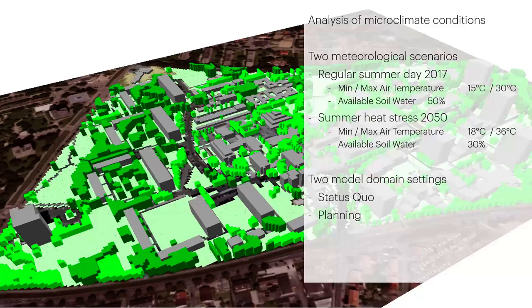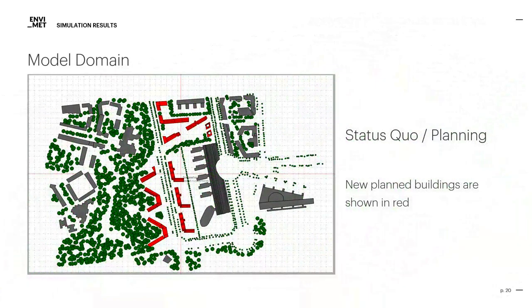Those implications are mainly hotter air temperatures during nighttime and daytime and a lower amount of soil water being available. In the beginning, two model areas were designed: the current status called status quo and the planning status. Both are simulated for each meteorological scenario, so that we end up with four simulations. Here we see the model area scenarios combined in one picture — the vector-based model area in the program MONDE. Gray buildings are old buildings also included in the planning scenario; red buildings should be added. The green circles are representing trees of varying size, and we can clearly see a larger park in the western part of the model area.